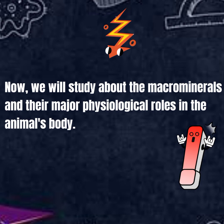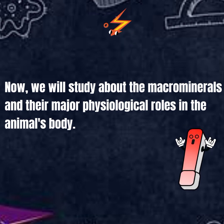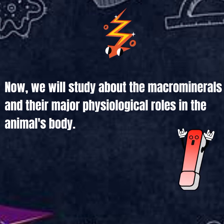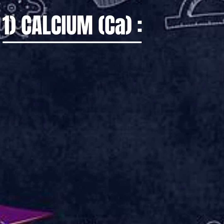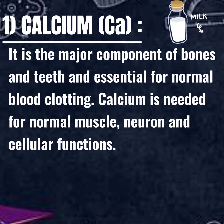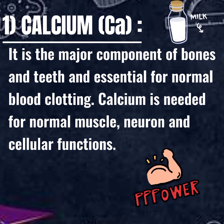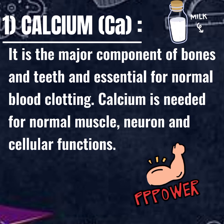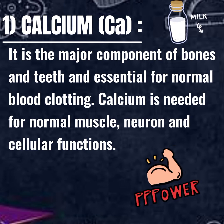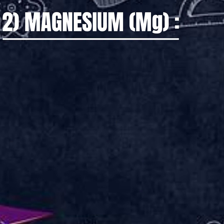Now we will study about the macrominerals and their major physiological roles in the animal's body. Calcium: it is the major component of bones and teeth and essential for normal blood clotting. Calcium is needed for normal muscle, neuron, and cellular functions.